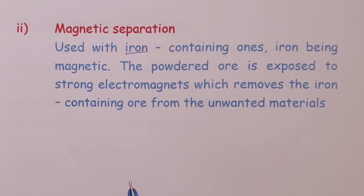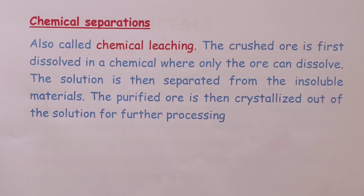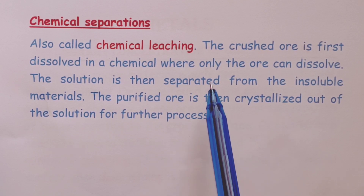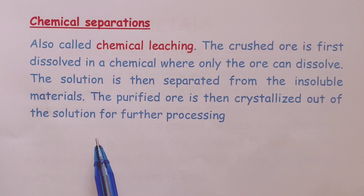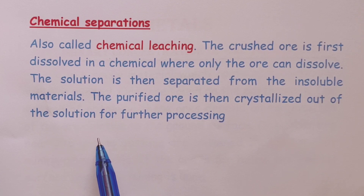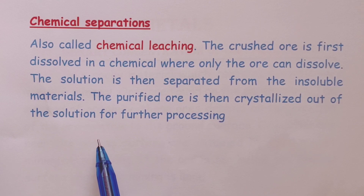Chemical separation procedure is also called chemical leaching. In this procedure, the crushed ore is first dissolved in a chemical where only the ore can dissolve. The solution is then separated from the insoluble materials. Once this is done, the purified ore will be crystallized out of the solution for further processing.